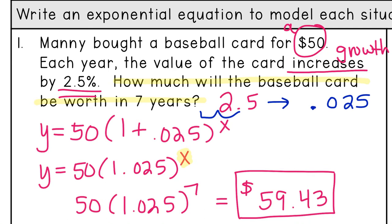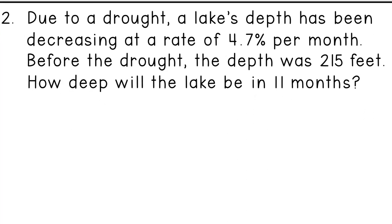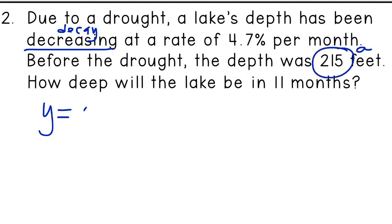Let's look at the next problem. Due to a drought, a lake's depth has been decreasing at a rate of 4.7 percent per month. Before the drought the depth was 215 feet. How deep will the lake be in eleven months? The word 'decreasing' tells us this is going to be decay, and we're going to use a subtraction sign.